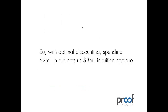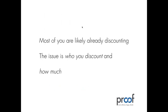With optimal discounting and spending $2 million in aid, we get $8 million in net tuition revenue. Discounting is something a lot of people already do — you are giving financial aid. The real question is whether or not you know who you're discounting and how much and why. If you could tailor your discount rate in a way that is targeted per student or per segment of students, you have much better control and greater capability of maximizing every dollar.